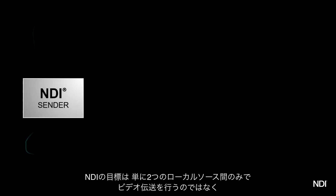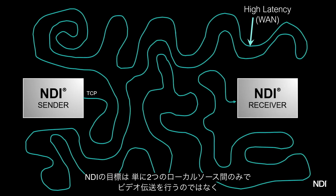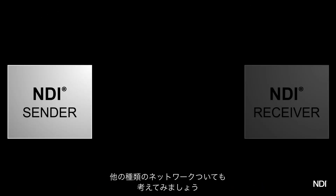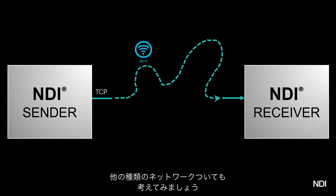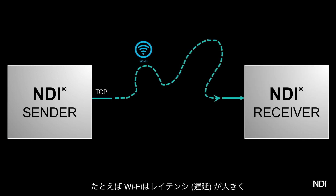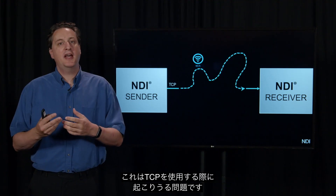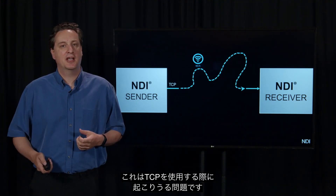One of our goals with NDI was not just to have video between two local sources. Instead, we want it on incredibly long connections — thousands of miles long — that might move from my camera here to the cloud. And think about all the other networks out there. You have Wi-Fi networks, which also have high latency, and it's very common that you have packets competing with each other for wireless bandwidth. That is a big problem for TCP.